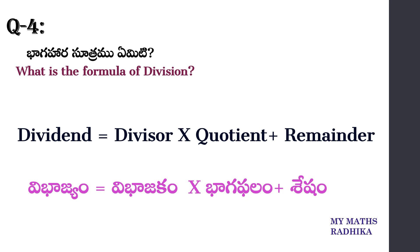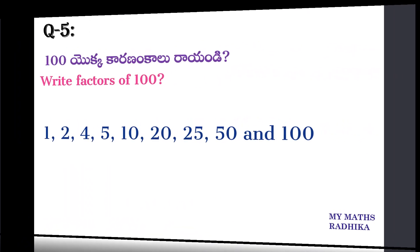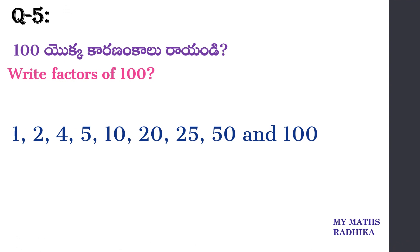What is the formula of division? Dividend is equal to divisor into quotient plus remainder. Vibhajyamu is equal to vibhajyakam into bhagapalam plus shesham. Next question.